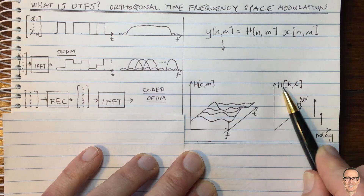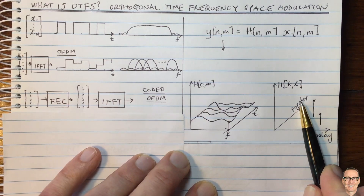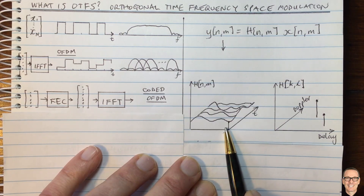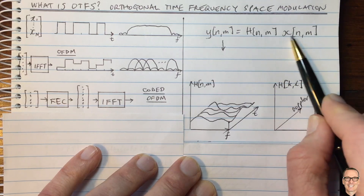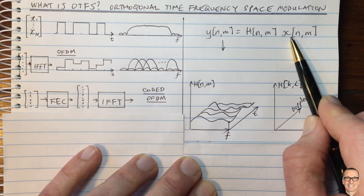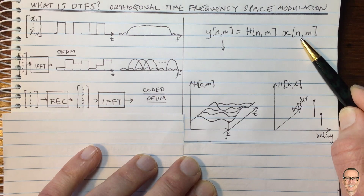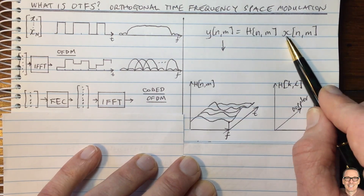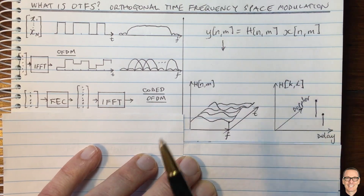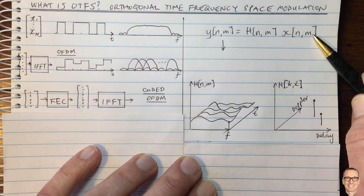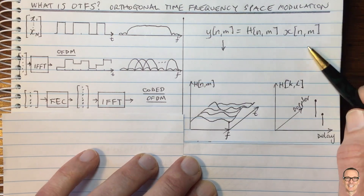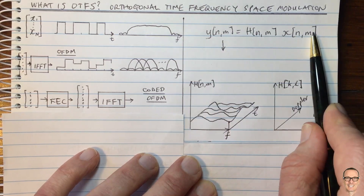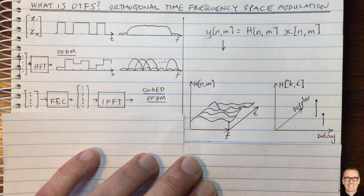This is really the key to OTFS — translating into the delay-Doppler domain. Note that delay and Doppler are strictly properties of the channel; when we apply the same two-dimensional transform to the input data X, the data does not inherently have delay or Doppler, but it is common to use the same terminology. So I will use those terms in quotes when talking about X and Y, though this can be confusing.